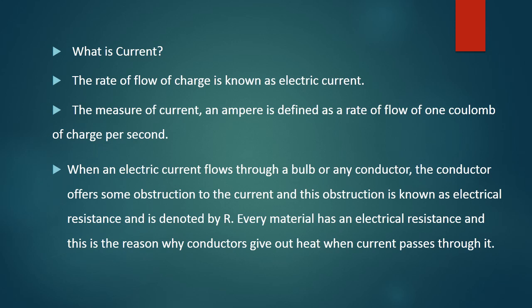When there is a flow of current, there is an obstruction. And the obstruction varies according to the material. If the current flow is obstructed, or an obstruction is offered by the particular material, then the phenomenon we can term it as resistance. Usually it is denoted by R. Every material has an electrical resistance, and this is the reason why conductors give out heat when current passes through it. When there is an obstruction, the flow of charges gets obstructed in their path.